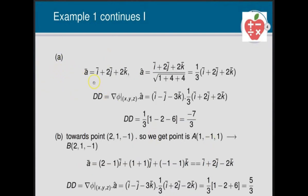For part (i), the direction vector a = i + 2j + 2k, so we find â = (i + 2j + 2k) / |a|. The magnitude is √(1² + 2² + 2²) = √9 = 3, so â = (1/3)(i + 2j + 2k). The directional derivative = grad φ · â = (1/3)[(1)(1) + (−1)(2) + (−3)(2)] = (1/3)(1 − 2 − 6) = −7/3.